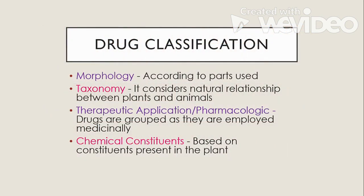Drugs are also classified according to morphology, taxonomy, therapeutic or pharmacologic application, or chemical constituents. Morphology refers to the parts used — leaf, flower, fruit, bark, and so on. Taxonomy considers the natural relationship between plants and animals. Therapeutic or pharmacologic application groups drugs as they are employed medicinally. Chemical constituents classification is based on the constituents present in the plant, such as lipids, carbohydrates, fats, waxes, glycosides, alkaloids, tannins, and many more.